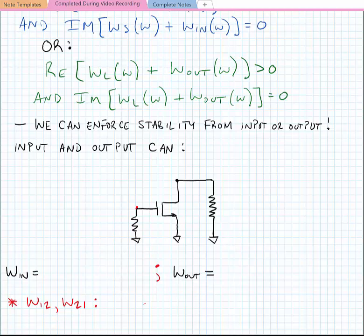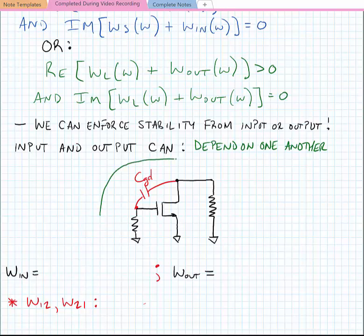Now why is this important in a transistor amplifier? The input and output can depend on one another. This is especially true at high frequencies where we might have some parasitic gate-to-drain capacitance C_gd. This gate-to-drain capacitance allows a signal to come from the input through this capacitance, see the load, and then reflect off the load. The reflection can come back to the input and this can keep going on over time.